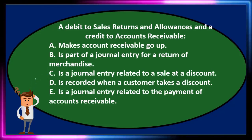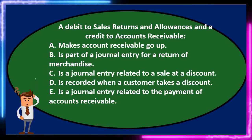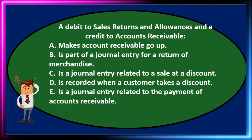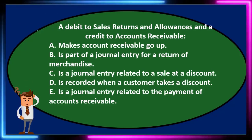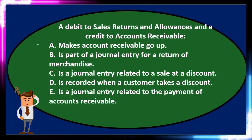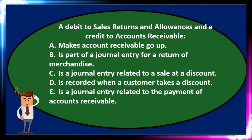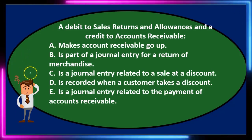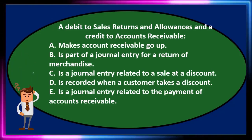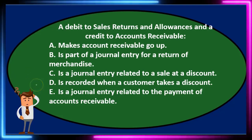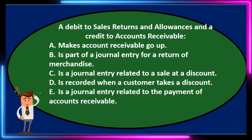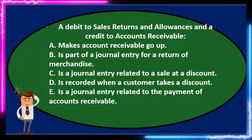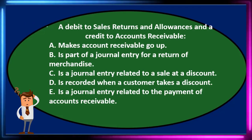Next question: a debit to sales returns and allowances and a credit to accounts receivable — A: makes accounts receivable go up. B: is part of a journal entry for a return of merchandise. C: is a journal entry related to a sale at a discount. D: is recorded when a customer takes a discount. Or E: is a journal entry related to the payment of accounts receivable. So the question is: a debit to sales returns and allowances and a credit to accounts receivable is what?